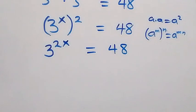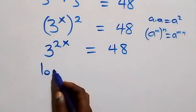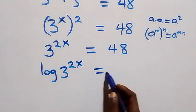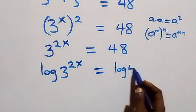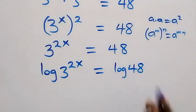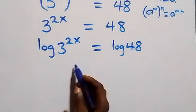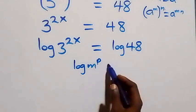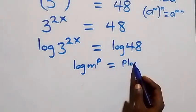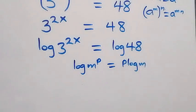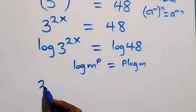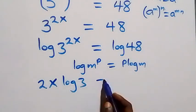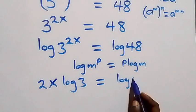Here we take the log on both sides — that is, we have log of three raised to power two x, equals to log forty-eight on this side. Applying the power rule of log, when we have log m raised to power p, this is the same thing as p times log m. So the power is two x, and this becomes two x times log three, equals to log forty-eight.